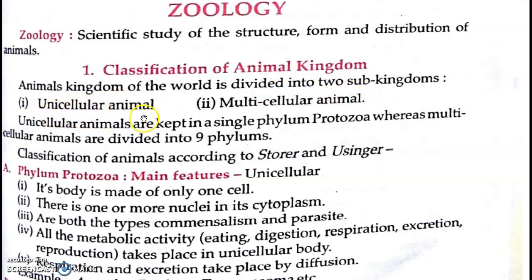The first sub-kingdom is unicellular animals. Uni means single, so unicellular means single cell. Unicellular animals are made up of only a single cell. The second is multicellular organisms — animals that have many cells. For example, bacteria are unicellular, while humans are multicellular animals.